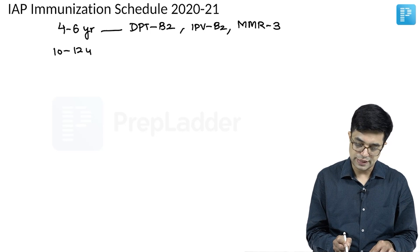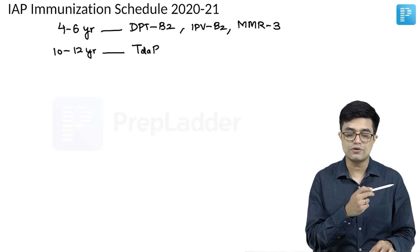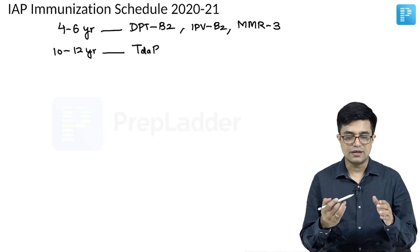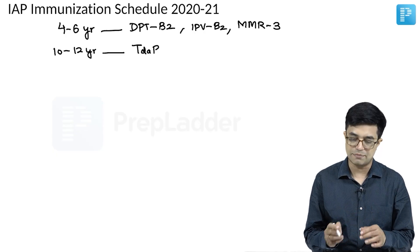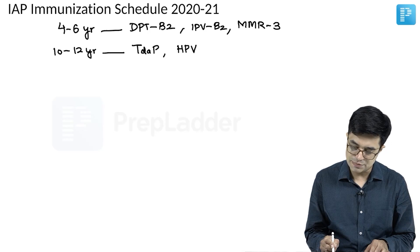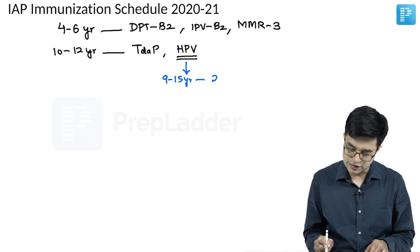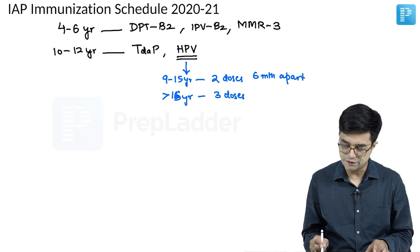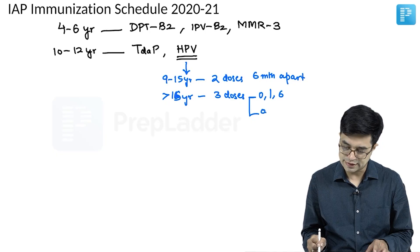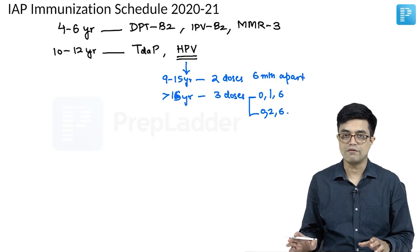Then at 10 to 12 years, you will use Tdap. Tdap is not part of the national immunization schedule — there you use only Td. Here you use Tdap, which is the acellular, slightly reduced form of diphtheria toxoid with acellular pertussis. In addition, the IAP schedule recommends HPV vaccine. If the age of the child is between 9 to 15 years, 2 doses are given 6 months apart. If the patient is 16 years and above, then 3 doses are given — either a 0, 1, and 6 months regimen or 0, 2, and 6 months regimen depending on whether you are using Gardasil or Cervarix, the bivalent or quadrivalent form.